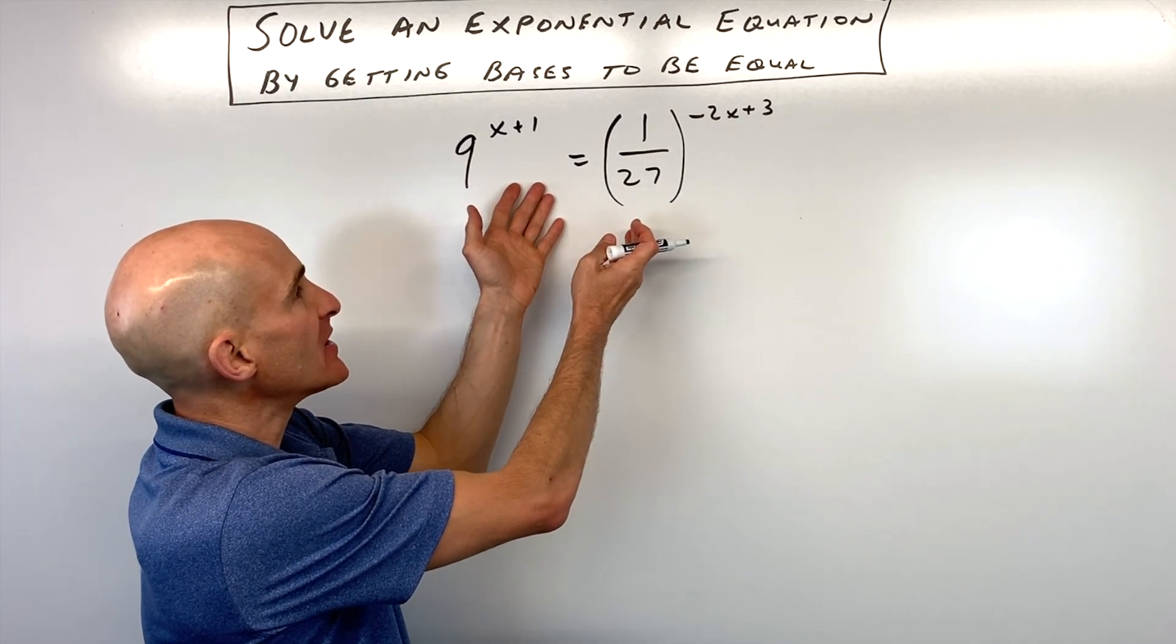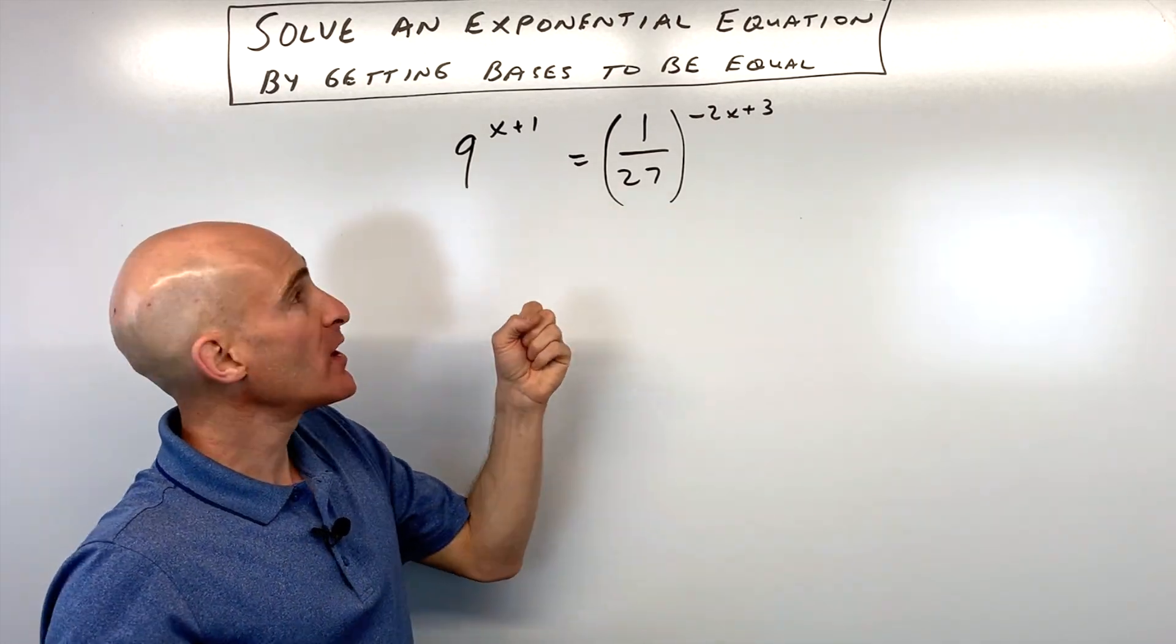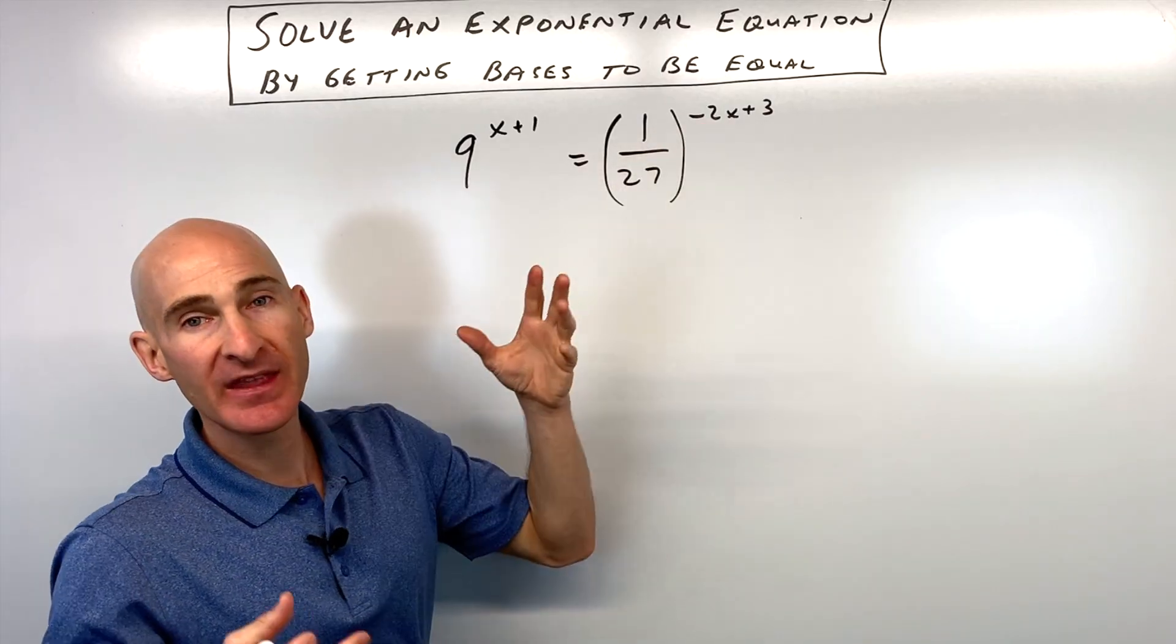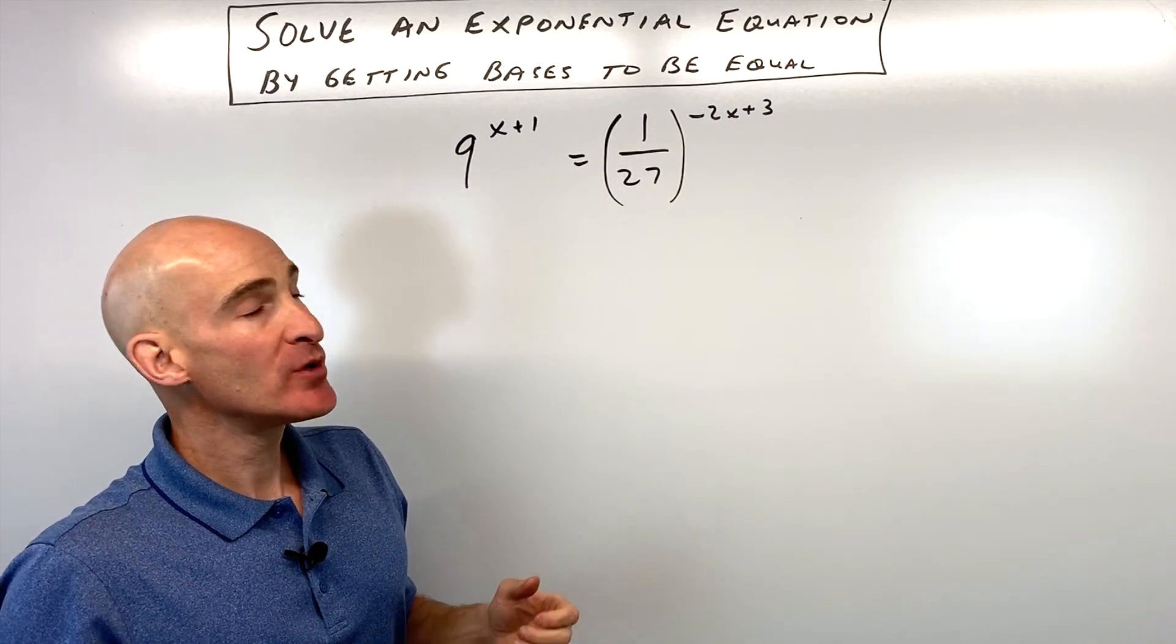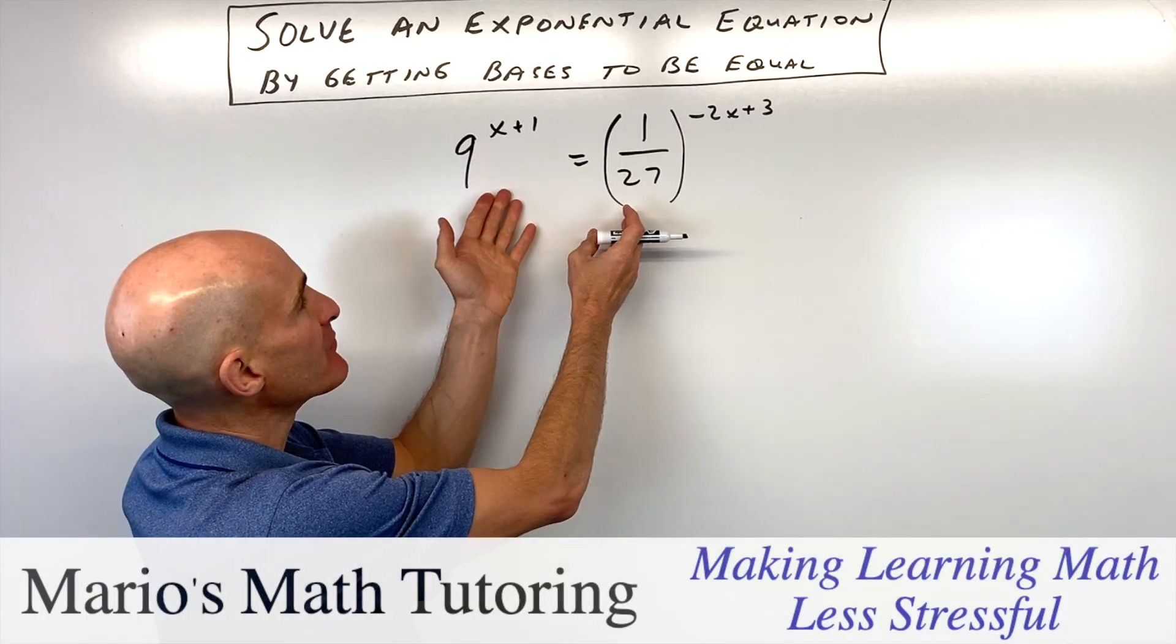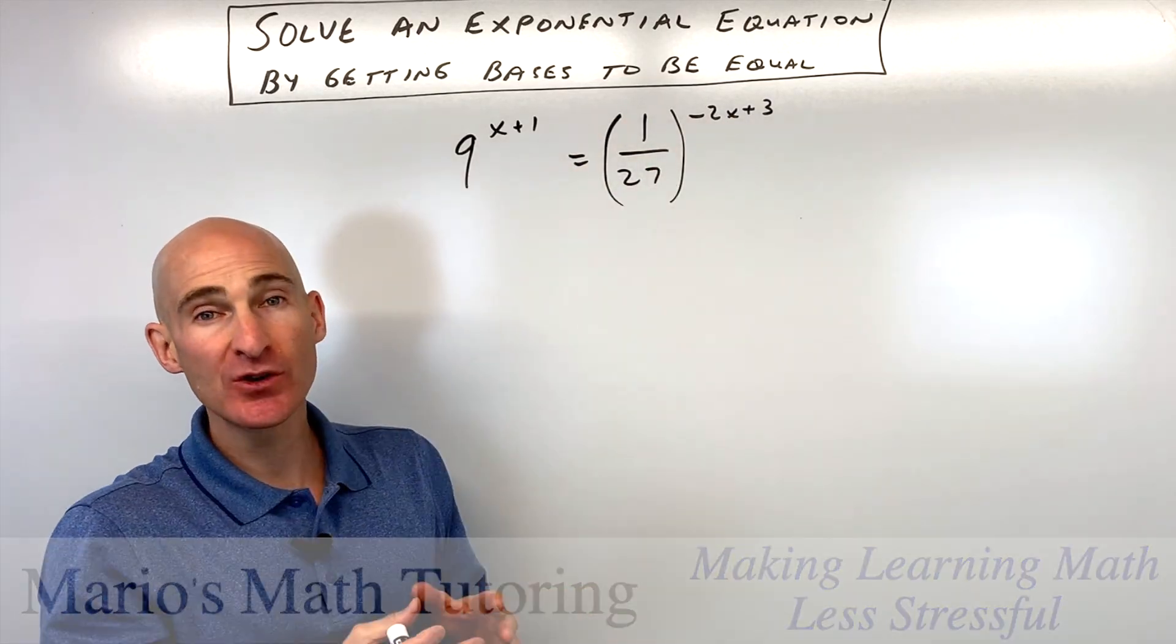We have this exponential equation. An exponential equation is where you have that variable in the exponent. What you can do with these problems is if you can get the bases to be the same, then all we have to do is set the exponents equal and solve.